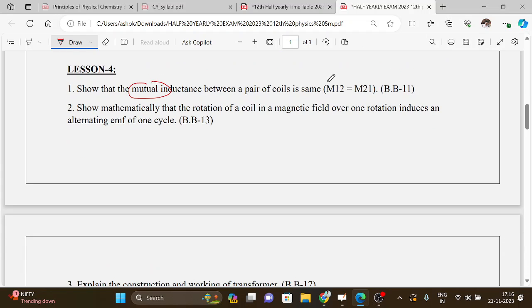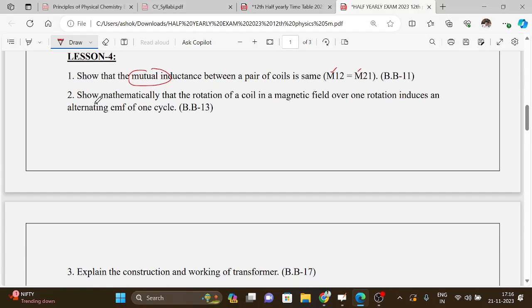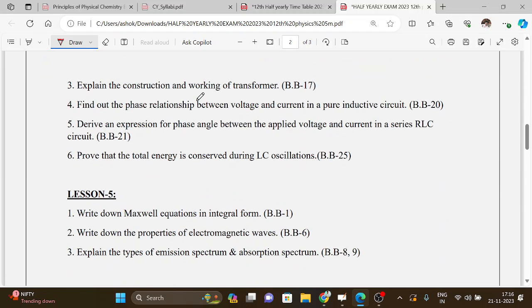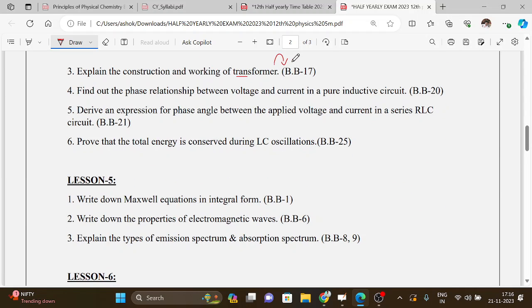Lesson 4: mutual induction M12 equal to M21, prove this. Then second question is very important in public exam: show mathematically that the rotation of a coil in a magnetic field over one rotation induces an alternating EMF of one cycle, book back 13th question with graph. Construction and working of transformer and transformer losses.